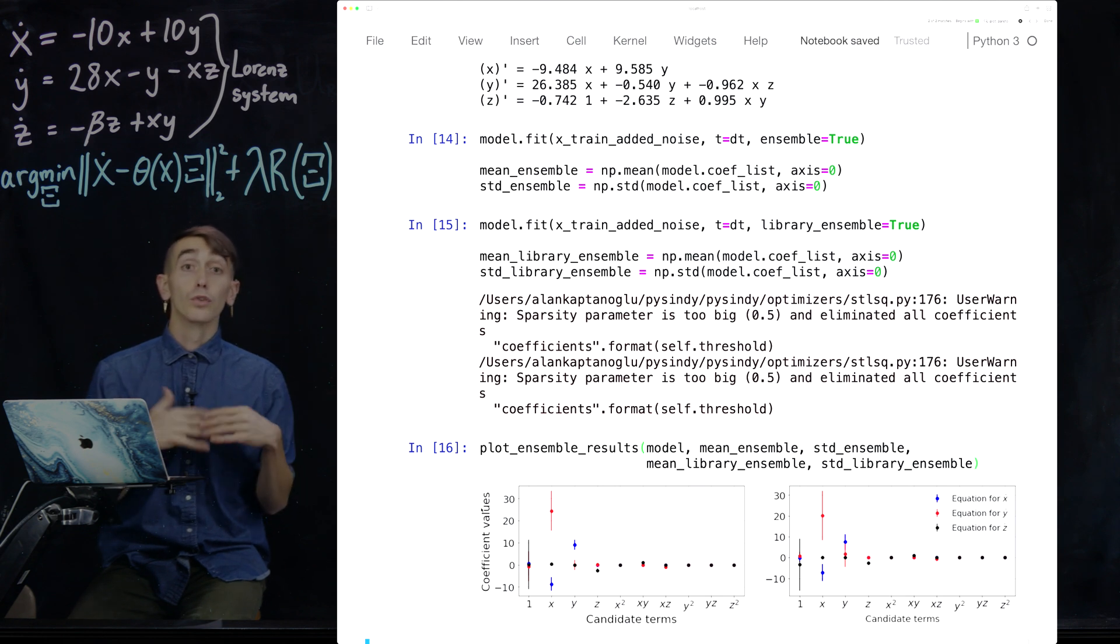But still, these are both great ways to get some statistics about how frequently your coefficients are showing up and what the error bars are on those coefficient values. And so this can really robustify things against noise and tell you something about how noise is affecting your system. So thanks for listening and we'll continue on with part 2d in the next video.